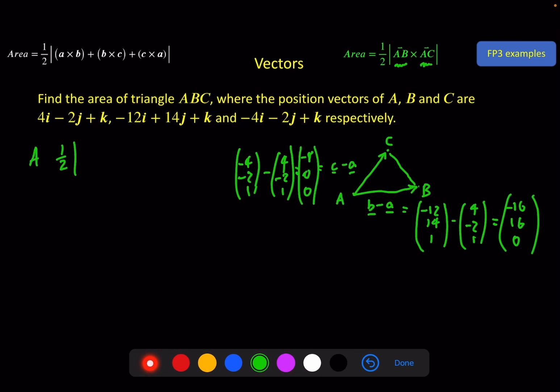So my area formula is half times -16, 16, 0 cross with -8, 0, 0. And it's always nice when zeros come up here, it makes this process much easier. So the top element, 0 and 0. Middle element, 0 and 0. And the bottom element, 0 minus 16 times -8, 128. And as you can see, we're getting the same answer.